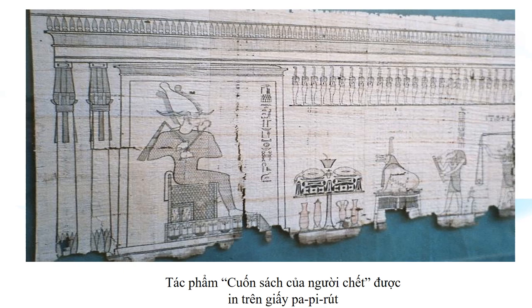Tên gọi khác là 'Sách hướng tới ánh sáng' hay 'Tử thư' - tập hợp咒 chú phép thuật được ghi lại để giúp linh hồn người chết sang thế giới bên kia thông qua cửa âm phủ. Ban đầu cuốn sách được khắc bằng chữ tượng hình trong các khu lăng mộ kim tự tháp và chỉ phục vụ cho các vị Pharaoh. Đến thời kỳ sau này, cuốn sách đã được các thầy tư tế chép lại trên giấy Papyrus và sử dụng cho cả hoàng thân, các quan chức và tầng lớp thượng lưu.